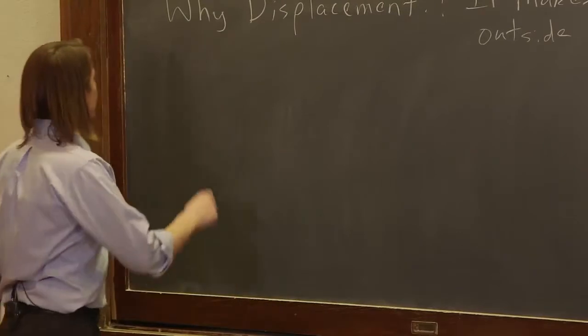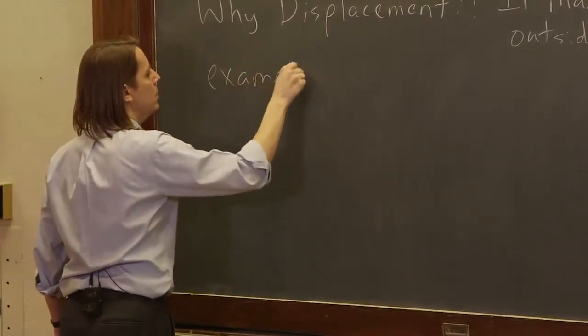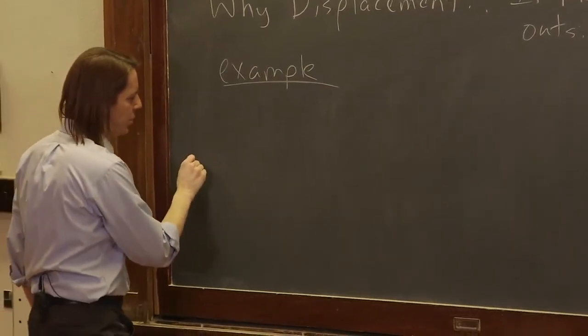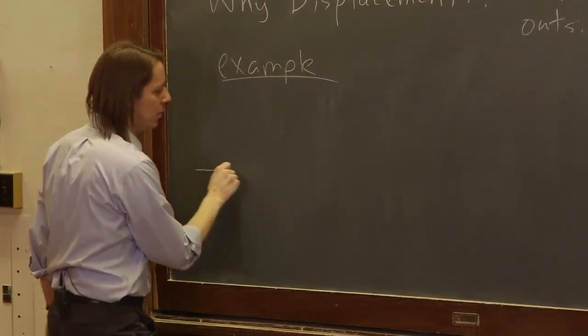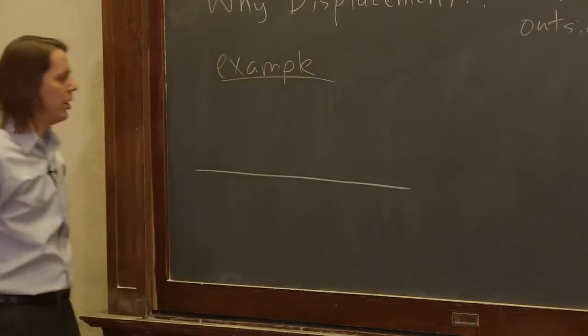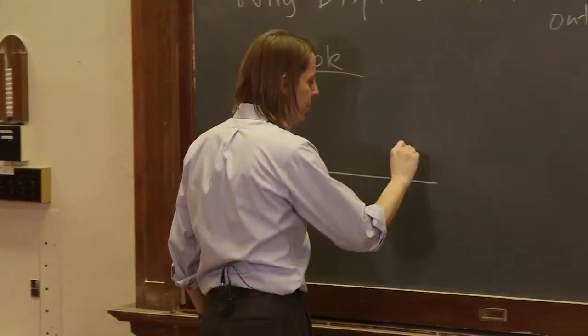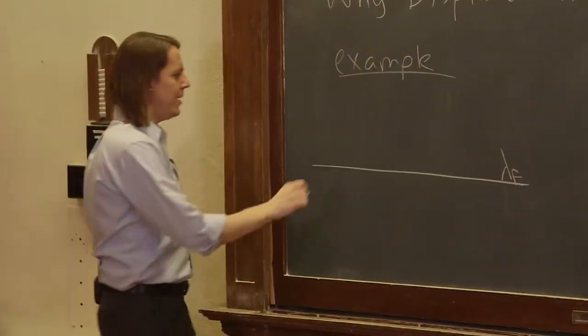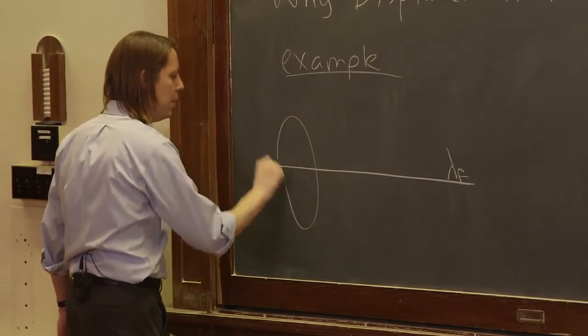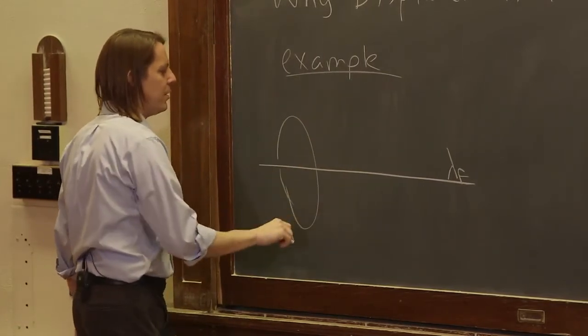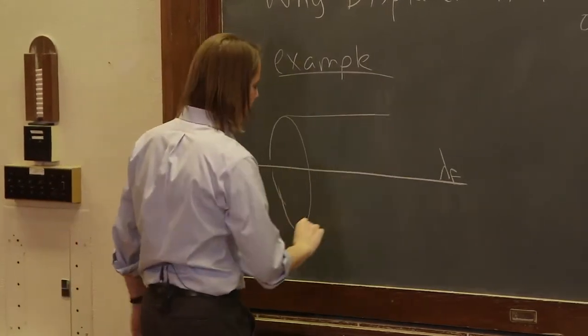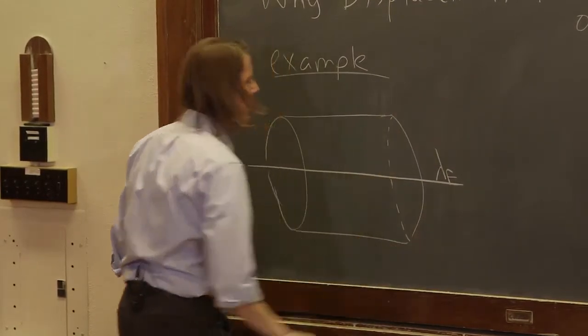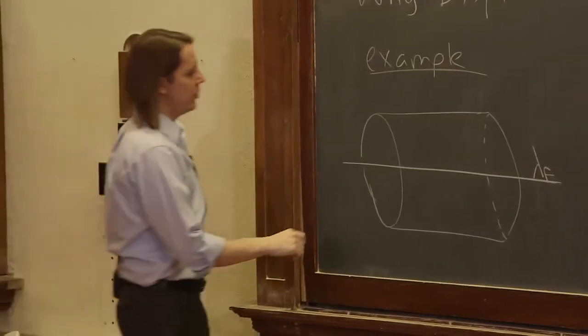So let's look at an example. Let's say we have a charged wire, a thin rod of charge, and it is the free charge - lambda F - that's making everything to happen. And then outside this wire is a solid dielectric cylinder.